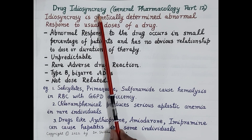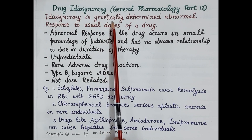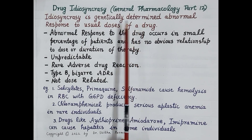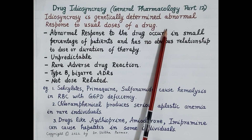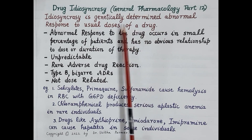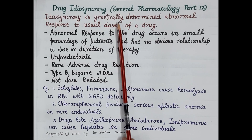It is very important to remember that idiosyncrasy is an adverse drug reaction. Idiosyncrasy is defined as a genetically determined abnormal response to usual doses of a drug. Since idiosyncrasy is genetically determined, it depends upon the genes of an individual, and thus these adverse drug reactions are restricted to individuals with a particular characteristic genotype.